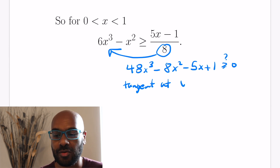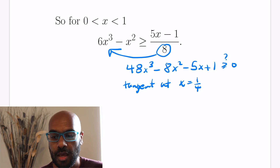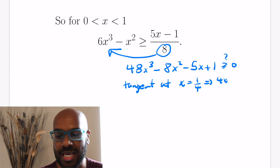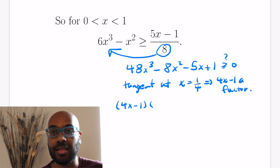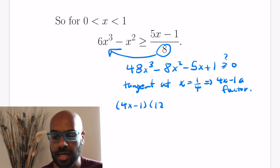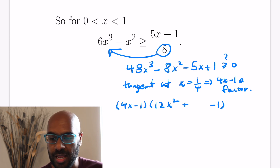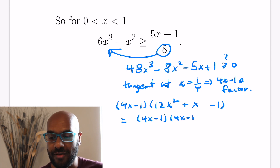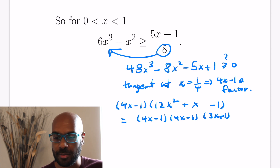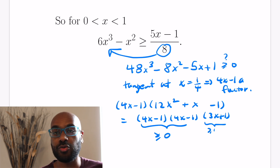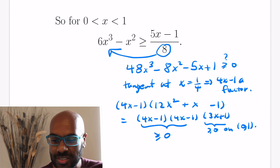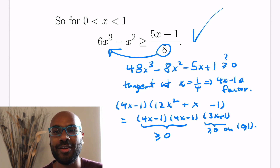We got this inequality from the tangent at x = 1/4, and there's a cool consequence: having a tangent at x = 1/4 forces (4x - 1) to be a factor — this is related to double roots, which I'll cover in a later video. Factoring (4x - 1) out of the cubic gives (4x - 1)(12x² + x - 1), which factors further as (4x - 1)²(3x + 1). Since (4x - 1)² ≥ 0 and (3x + 1) ≥ 0 on [0, 1], the whole expression is ≥ 0.